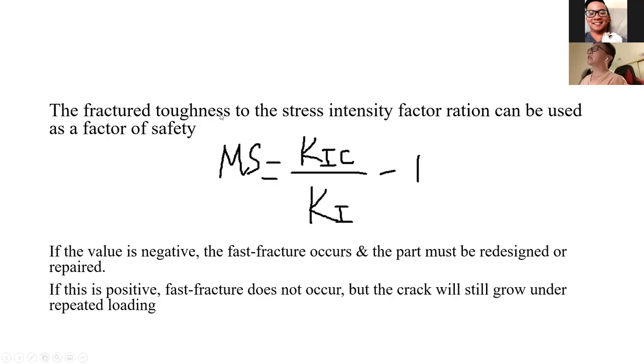The fracture toughness to stress intensity factor ratio can be used as a factor of safety with the formula MS equals K_IC over K_I minus one. If the value is negative, fast fracture occurs and the part must be redesigned or repaired. If the value is positive, fast fracture does not occur, but the crack will still grow under repeated loading.